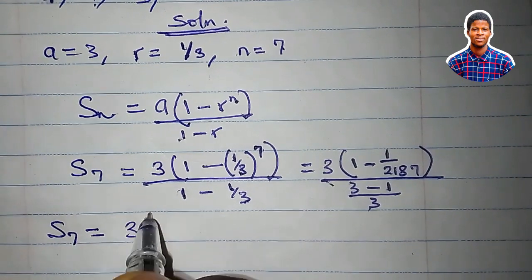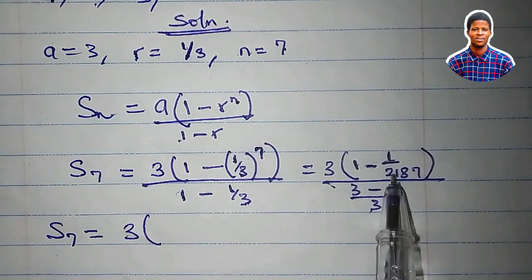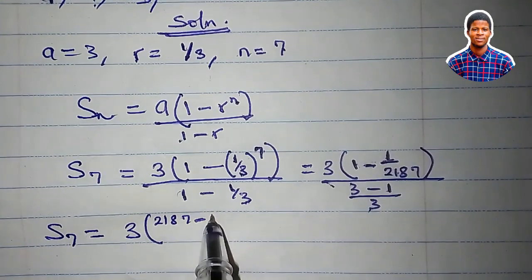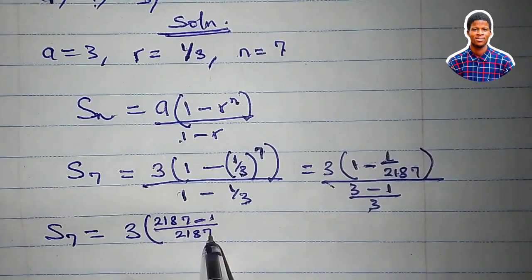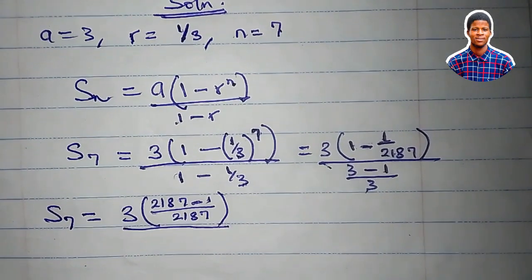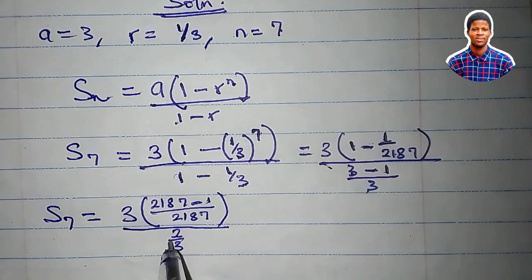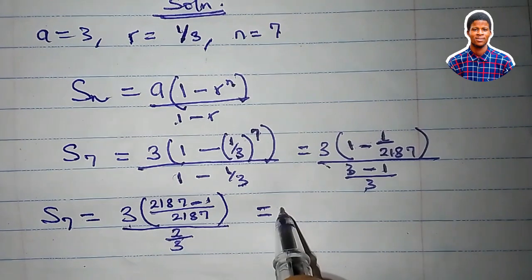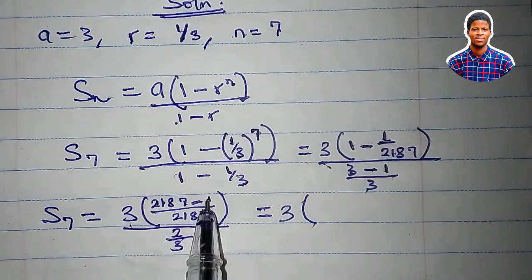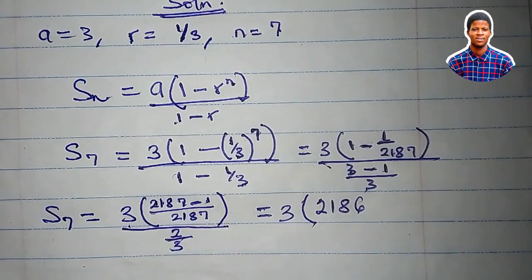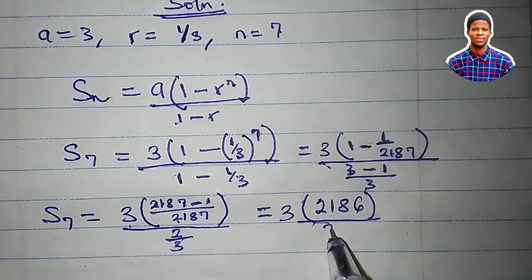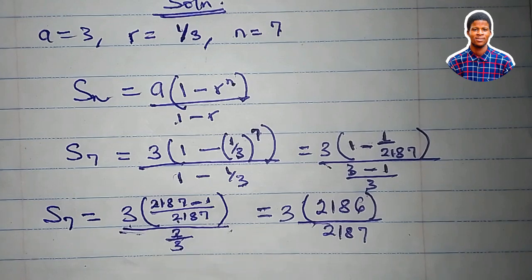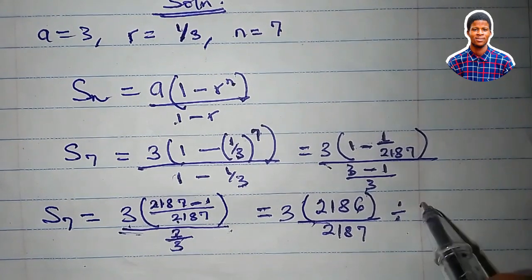S_7 = 3 × (2187 - 1)/2187 divided by 2/3. That gives 3 × 2186/2187 divided by 2/3. Dividing by 2/3 is the same as multiplying by 3/2. So S_7 = 3 × 2186/2187 × 3/2. We can simplify: 3 cancels with 2187 (giving 729), and 2 cancels with 2186 (giving 1093).